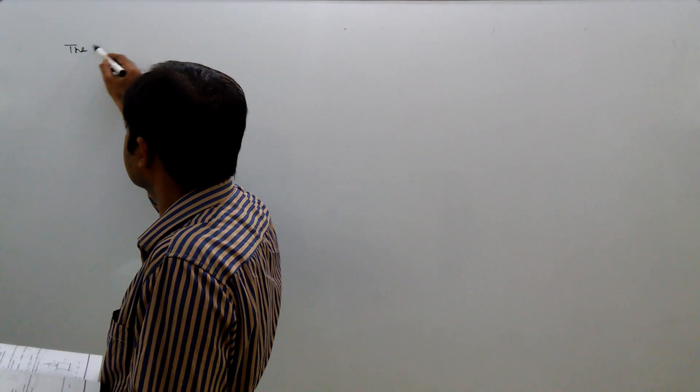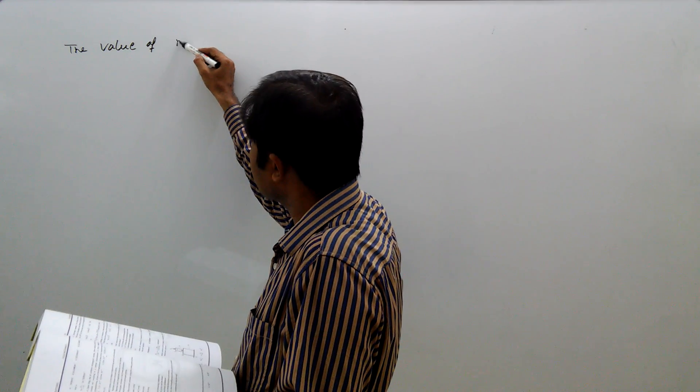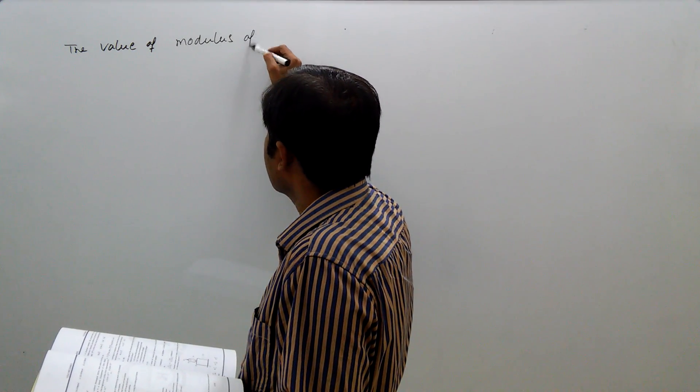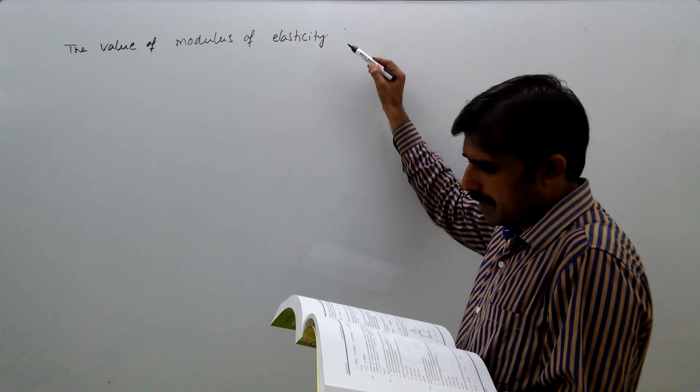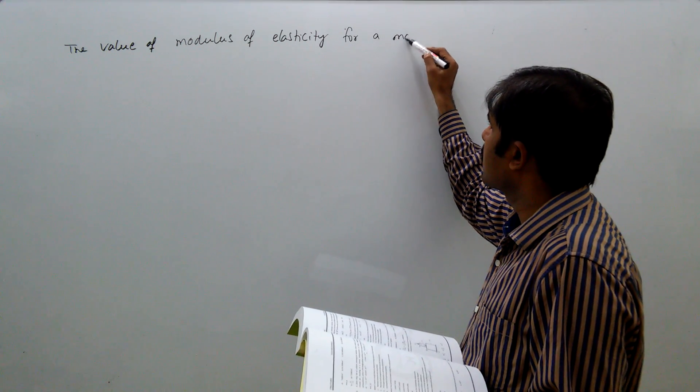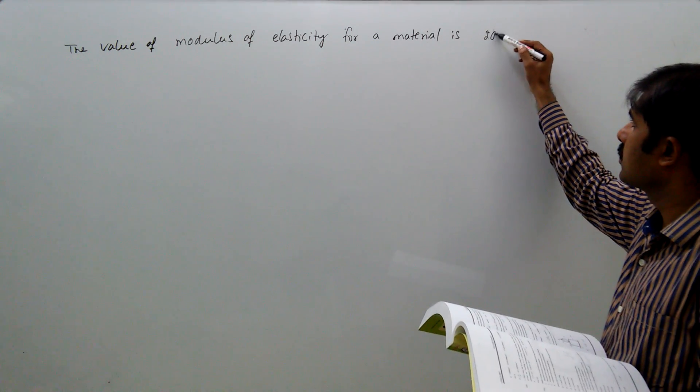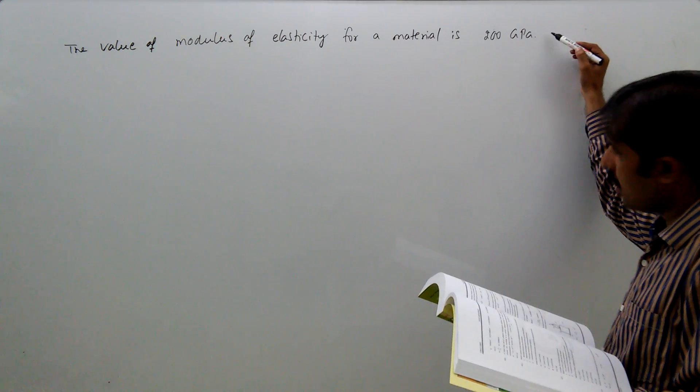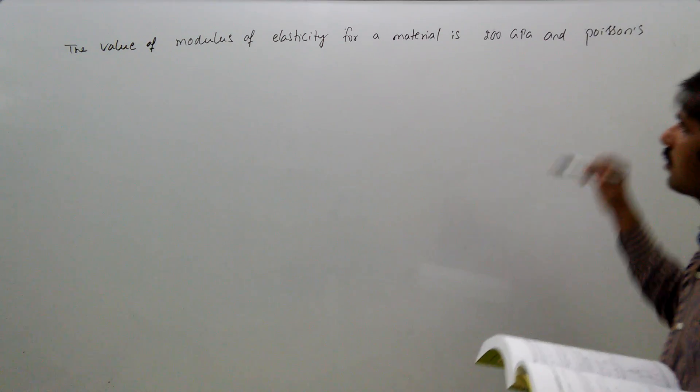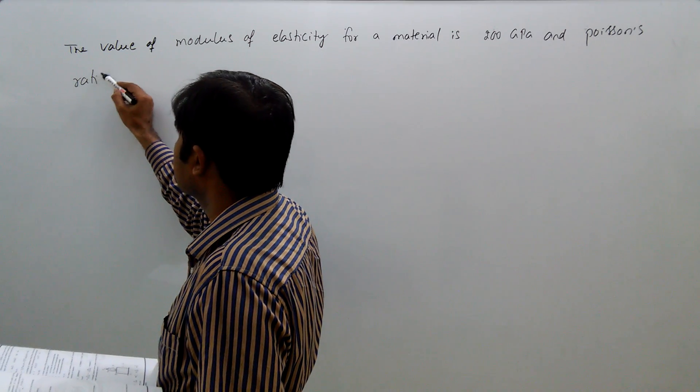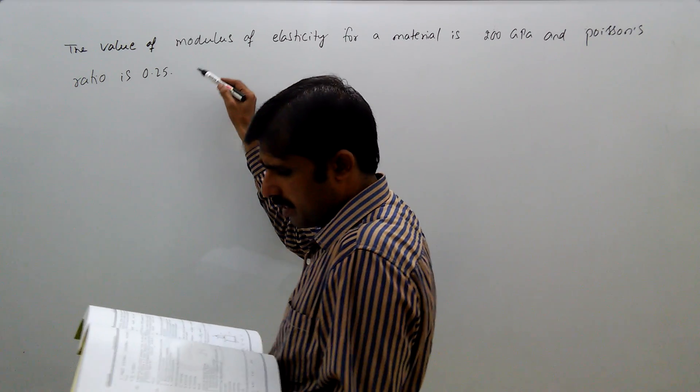The value of modulus of elasticity for a material is 200 gigapascals and Poisson's ratio is 0.25. What is its modulus of rigidity?